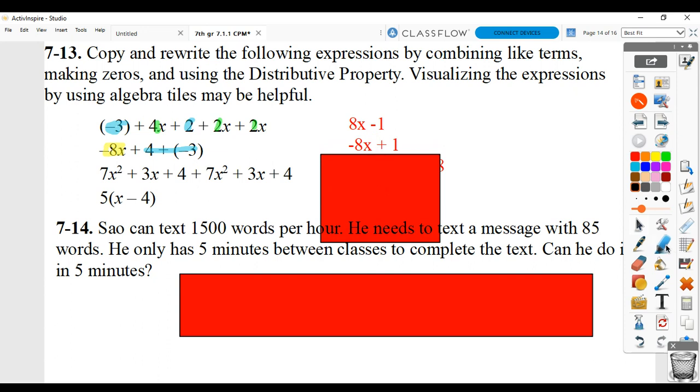For this one, you can combine 7x squared with the other 7x squared, giving you 14x squared. You can combine 3x with 3x, giving you 6x. And 4 can combine with 4, giving you 8. So 14x squared plus 6x plus 8.